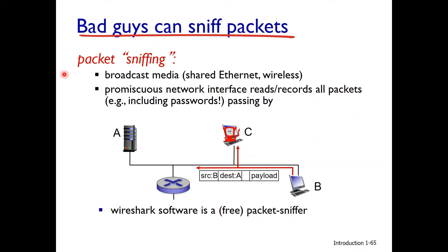Bad guys can also sniff packets — this is called packet sniffing. If you want to communicate, the packet will be transmitted over the network. A promiscuous network interface reads and records all packets passing by, meaning the packet can be copied by an attacker.